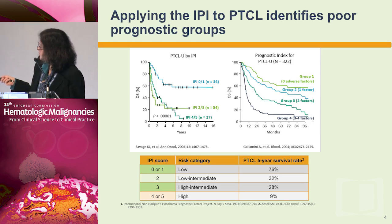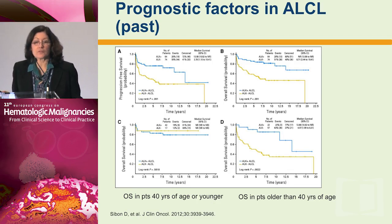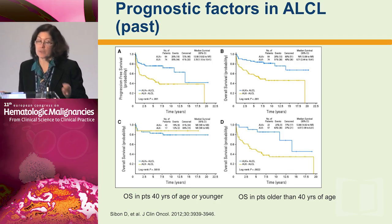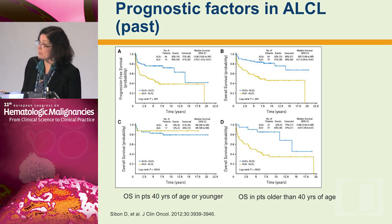There's also another prognostic score called the PIT score, which includes bone marrow involvement as well. The median survival for IPI 2 or greater is in the order of 30% or less, so not very good. One disease where we have some important prognostic factors, including some new ones, is anaplastic large cell lymphoma.